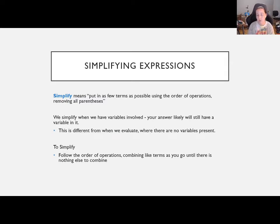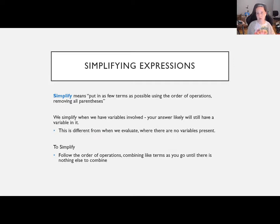Simplifying expressions — there are two things you can do: simplify or evaluate. The word simplify in math means to put things in as few terms as possible, using the order of operations. You're getting rid of parentheses and combining things together. When we simplify expressions, your answer is still going to have variables in it — you won't get a single number because it's unfinished. The process: follow the order of operations, combine like terms as you go, and keep going until there's nothing else to combine.